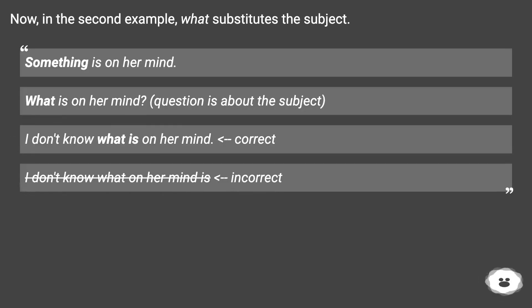Now, in the second example, what substitutes the subject. Something is on her mind. What is on her mind? Question is about the subject. I don't know what is on her mind. Correct. Incorrect.